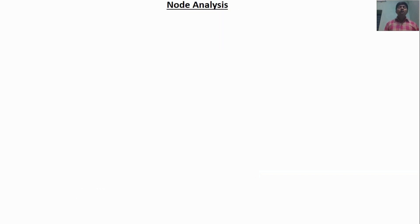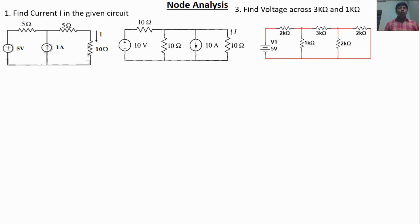Now I am going to solve three different problems using node analysis. If you clearly understand these three problems, you can solve any type of problem using node analysis. For problems one and two, the objective is to find the branch current. But in the third problem, the objective is to find the voltage across the 3kΩ and 1kΩ resistors.